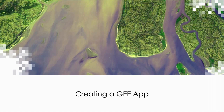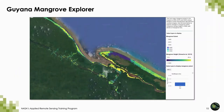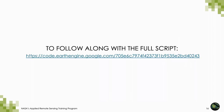Now we're going to go into a demo of how to actually create an app. We're going to build off of the work we did last time constructing a mangrove extent map in Guyana. The end result we are working towards today is a Guyana Mangrove Explorer app. We are going to create functionality to allow users to explore mangrove extent in three different years, load in Simard et al.'s data on mangrove height, and include graphs showing how total mangrove area has changed over those years. You can follow this link to access the finished script.